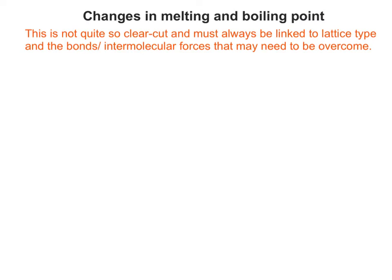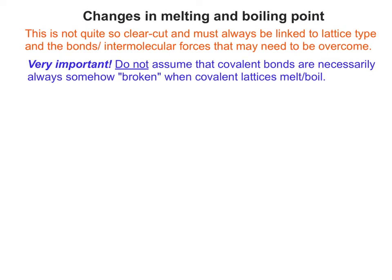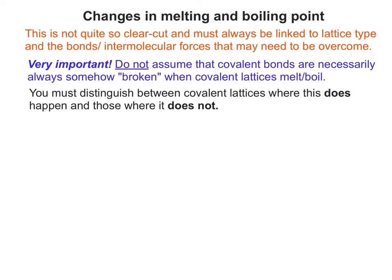Melting and boiling points are not quite so straightforward, and you always need to link them to the lattice type and the bonds or intermolecular forces that may need to be overcome. A very common mistake seen in exams is the assumption that covalent bonds are automatically broken when a covalent lattice melts or boils. In some cases covalent bonds are broken, but in other cases they're not, and it's very important to be able to distinguish between the two.